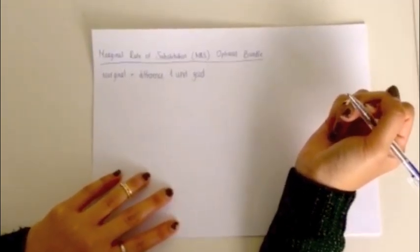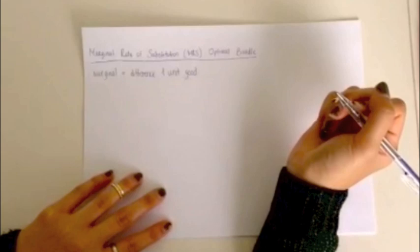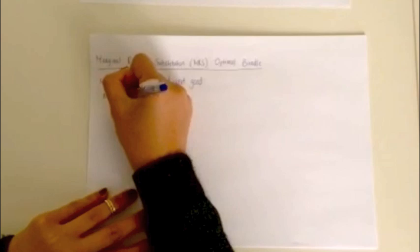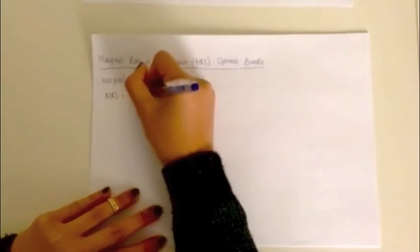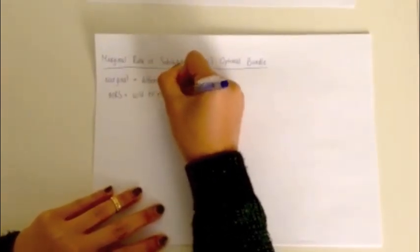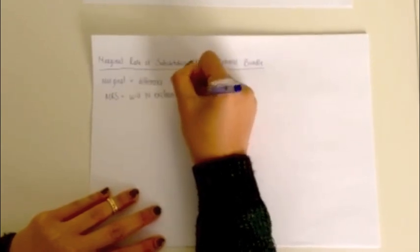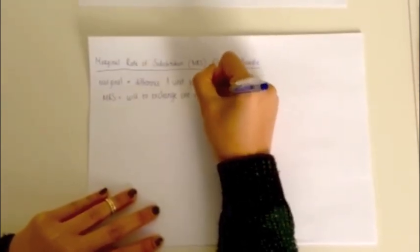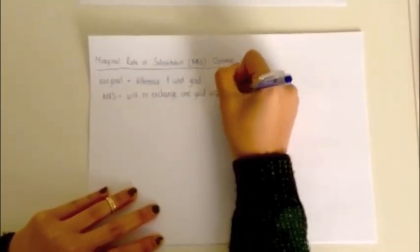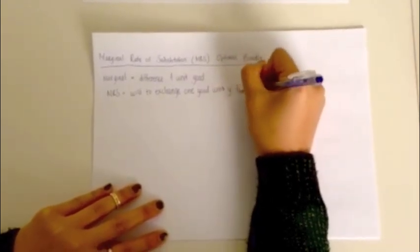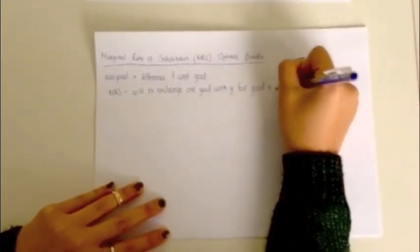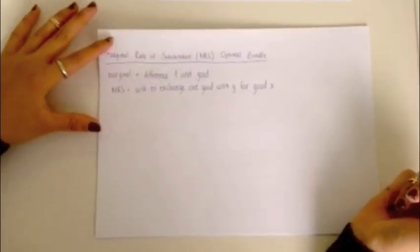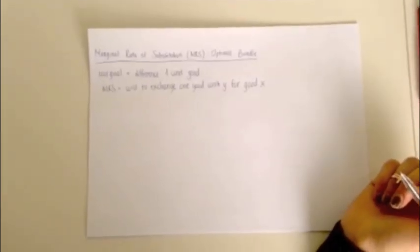So then if we link that into marginal rate of substitution, the marginal rate of substitution is how willing you are to exchange one good of unit X for a certain amount of good Y, and all while reaching the same utility in the end. Because we're talking about the optimal bundle, we also have to define budget constraint.